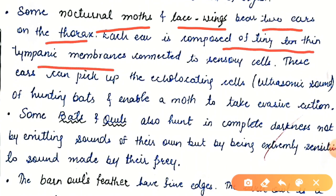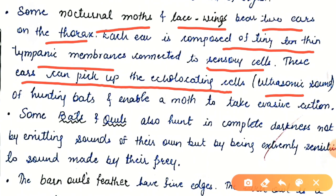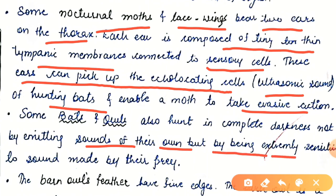Nocturnal moths and lacewings bear two ears on the thorax, and each ear is composed of a tiny thin tympanic membrane connected to sensory cells. These ears can pick up the echolocating ultrasonic sound of hunting bats and enable a moth to take evasive action. Whenever a moth or lacewing senses that a bat is producing echolocating sound to locate and capture them, they escape from their enemies through these special ears.